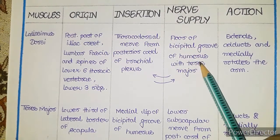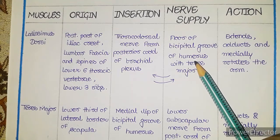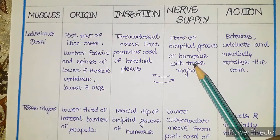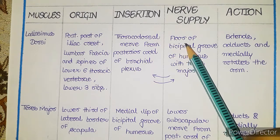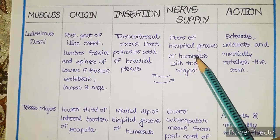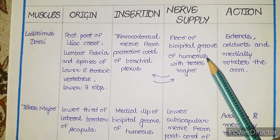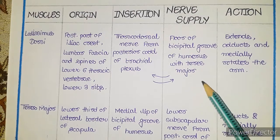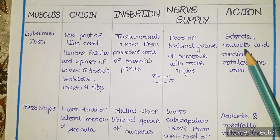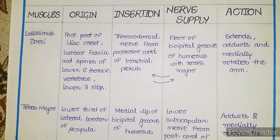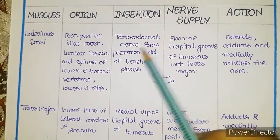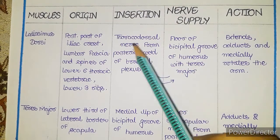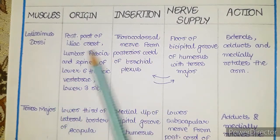The insertion of latissimus dorsi is on the floor of the bicipital groove of the humerus. In the bicipital groove we have two lips — the lateral lip and the medial lip — and between them is the floor of the bicipital groove, where latissimus dorsi attaches along with teres major. The action of this muscle is that it extends, adducts, and medially rotates the arm.